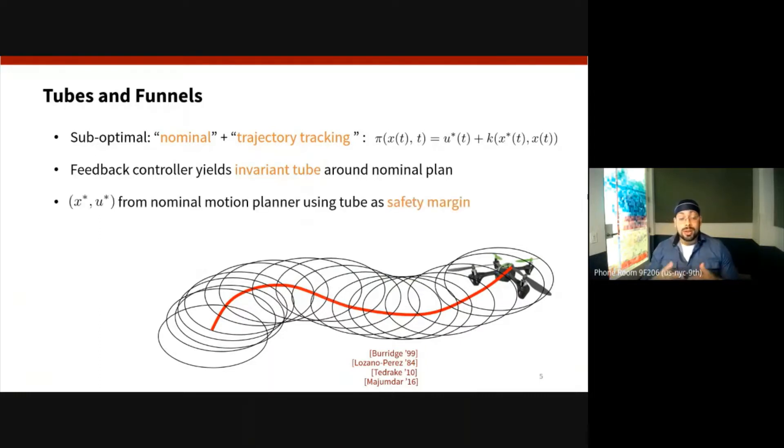So now you can compute the desired trajectory, this nominal motion plan, by using the tube as a safety margin. You would essentially just inflate the size of obstacles or other operational constraints.